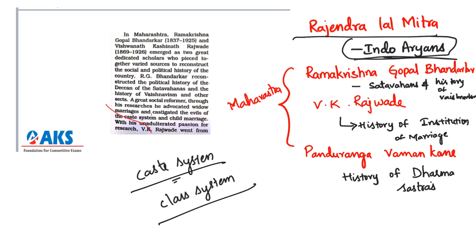Coming to the rationalistic approach in Maharashtra, there are three notable scholars: Ramakrishna Gopal Bhandarkar, Vishwanath Kashinath Rajwade (VK Rajwade), and Pandurang Vaman Kane. These people emerged as great dedicated scholars who tried to put together varied sources to construct the social and political history of the country. RG Bhandarkar tried to construct the political history of the Deccan — the Satavahanas — and wrote on the history of Vaishnavism and its sects.